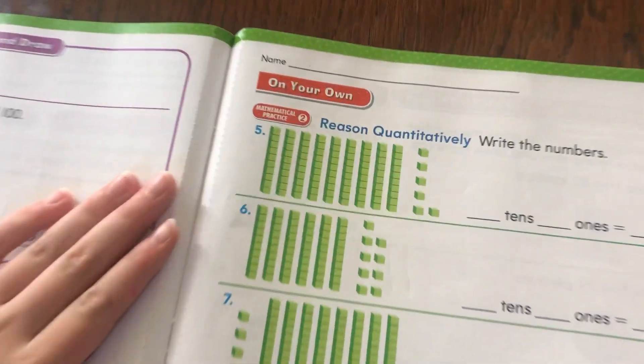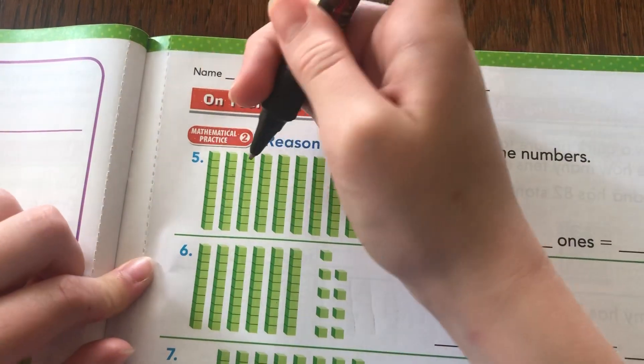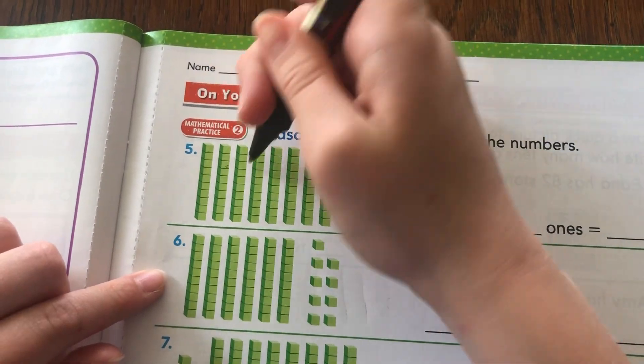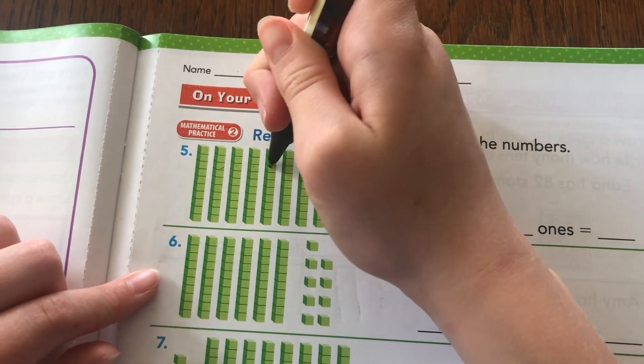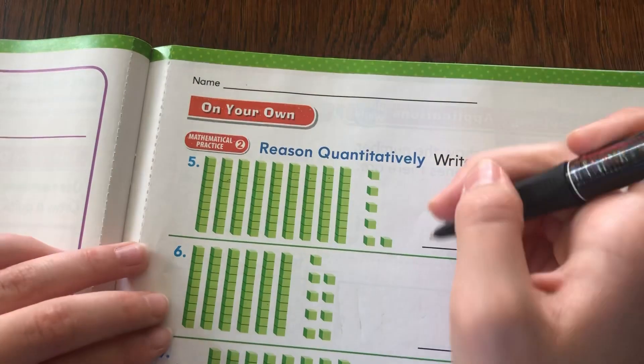Okay, so we're going to do problem five right here, and then you can see there's a lot of bars. So let's count them all. We have 10, 20, 30, 40, 50, 60, 70, 80, 90. So I'm going to put nine tens.